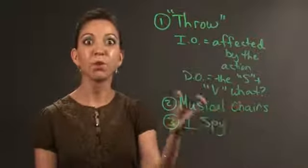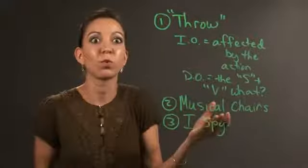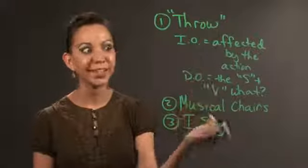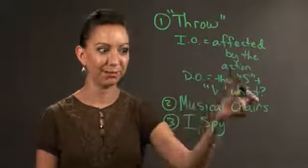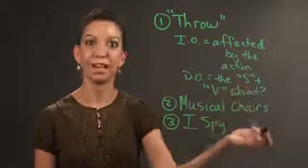...then the student that answers has to say, oh, a flower. Then you say, well, why is that a direct object? Because it, once again, repetition, repetition. It's the subject, verb, what. I spy what? I spy a flower.